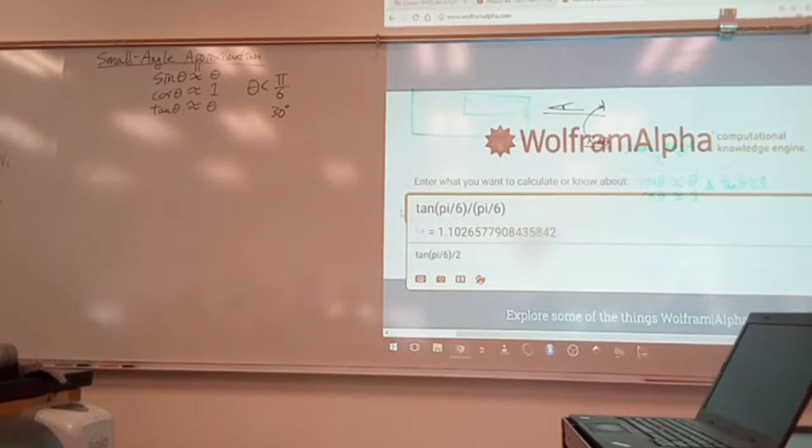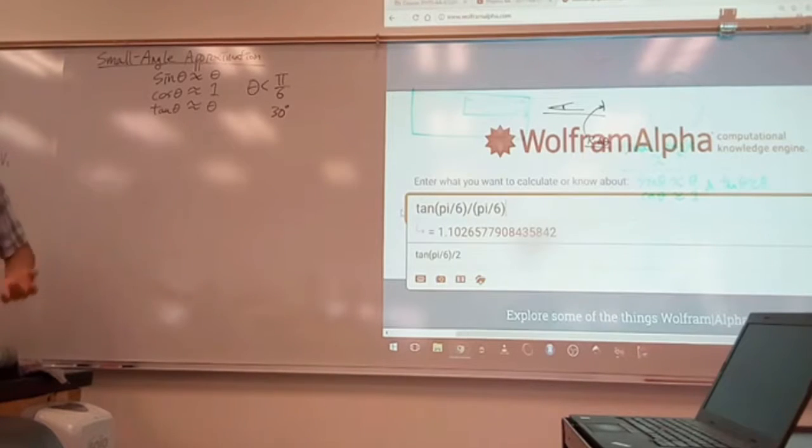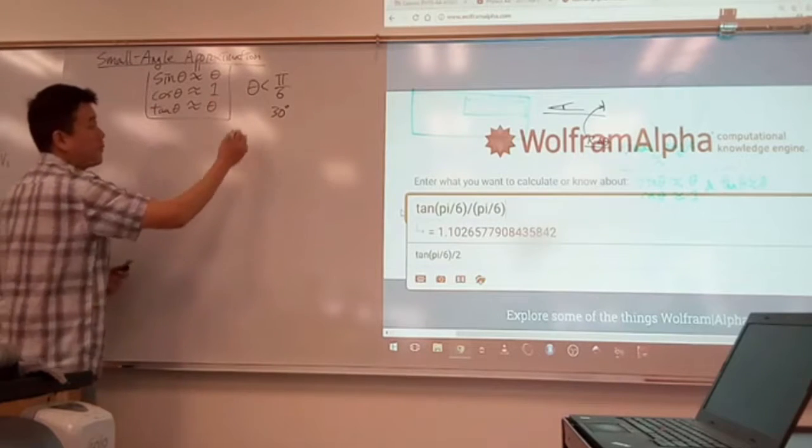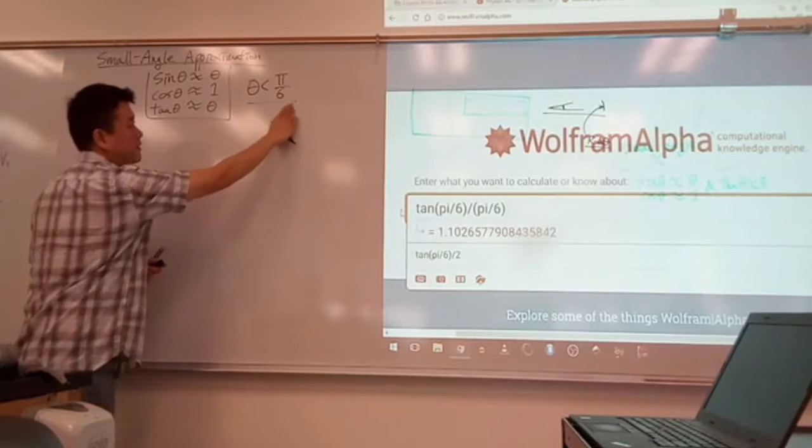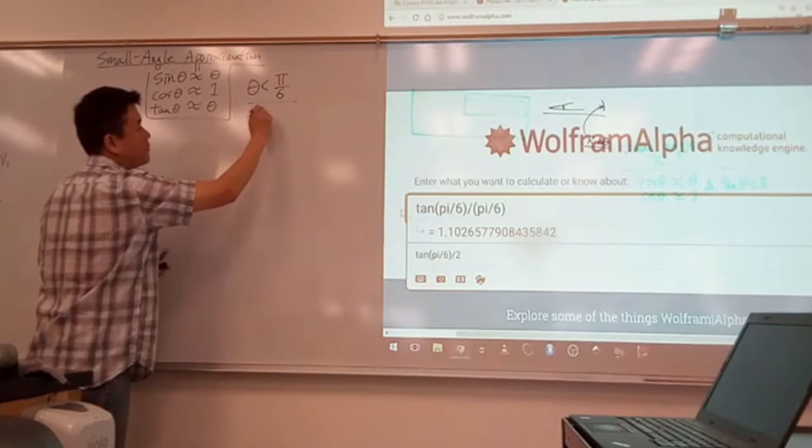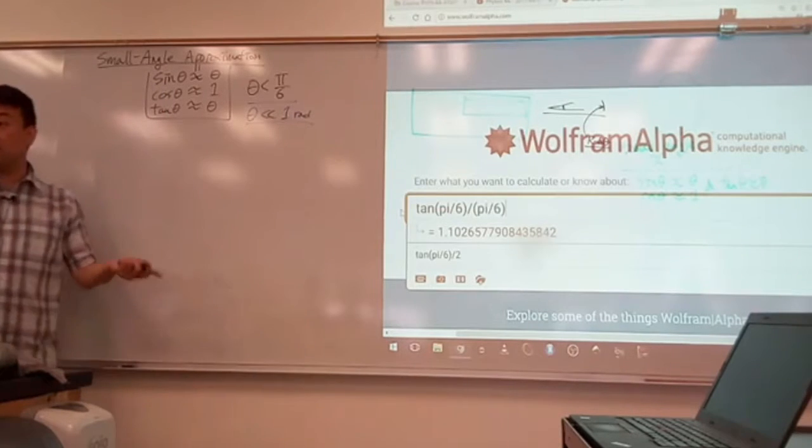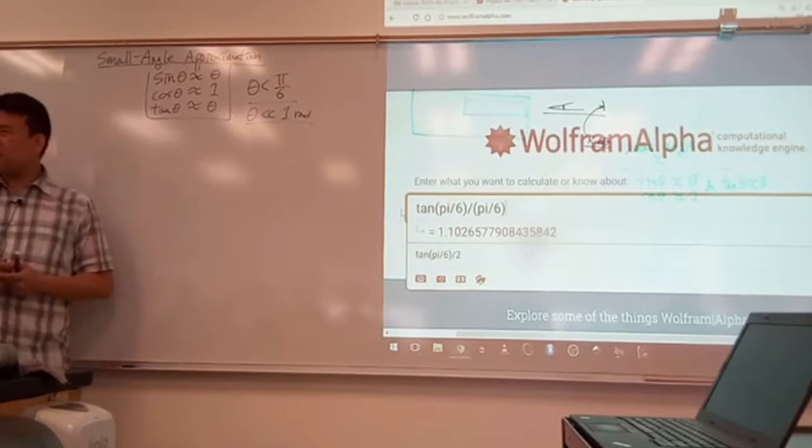So I could just give you this formula and that would actually be okay for the purpose of what we use this for in this class. If you just leave it at that, this is a set of useful approximation formulas that applies for something about this. Because the actual way we would write it down is actually theta much, much less than 1 radian. And the less it is, the better it is.